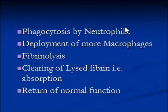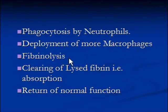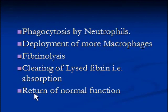Phagocytosis continues by neutrophils, and if neutrophils manage to finish the bacterial population, more macrophages are deployed. Towards the end of the process, fibrinolysis begins — meaning fibrin starts to break down and is absorbed by the interstitial tissue or lung tissue. Finally, the lung resumes normal function.